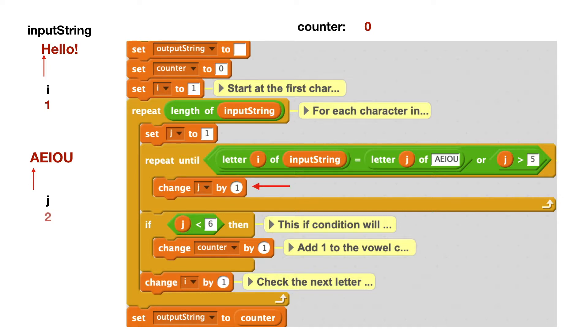So J isn't one anymore. It's two. So now when I loop back around, I'm still looking at letter one of input string. But now I'm looking at letter two of A-E-I-O-U. So I'm really looking at the E. And so now I'm asking, is H equal to E? Well, no, it's not. My J is still bigger than five. Or rather, my J is smaller than five. So J greater than five is also false. So my repeat until is still false. So I'm going to go back into my loop and change J by one again.